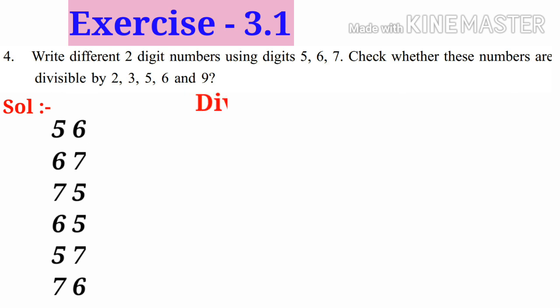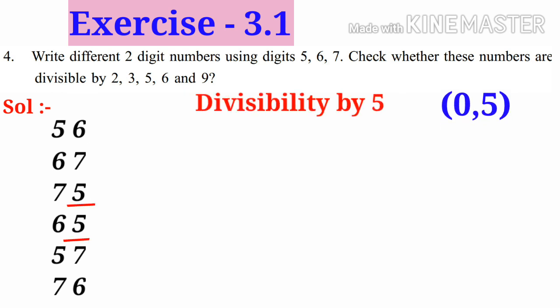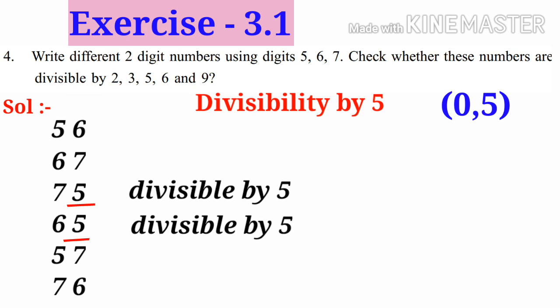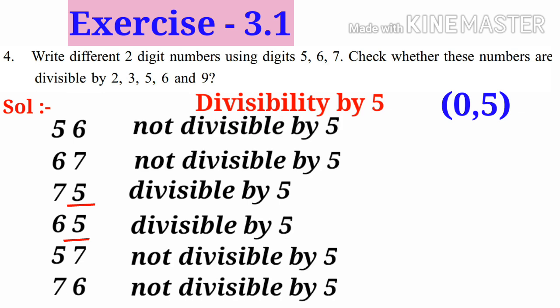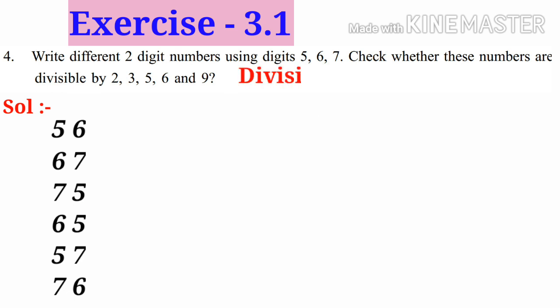Now let us check divisibility by 5. A number is divisible by 5 if it has 0 or 5 in its one's place. Here, the third number and fourth number have 5 in their one's place, so they are divisible by 5. The remaining numbers are not divisible by 5.